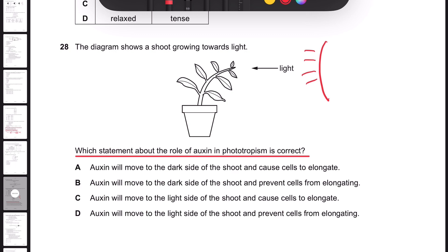Which means the auxin is moving to the darker side or shaded area because the auxin doesn't like the light. It goes into the side where there's no light and promotes the growth on that side.